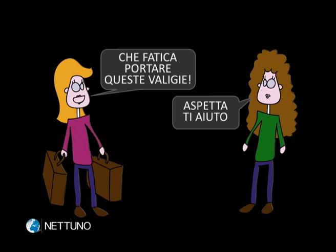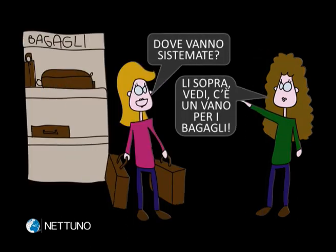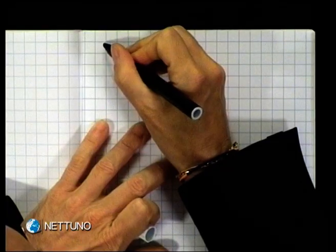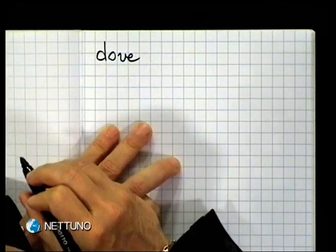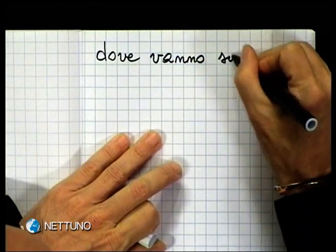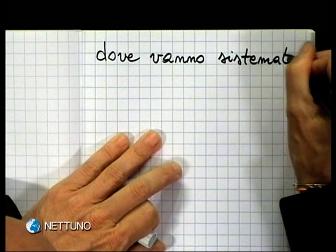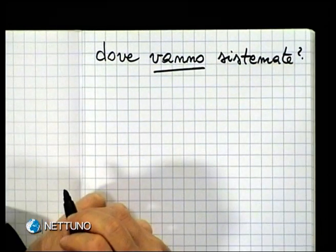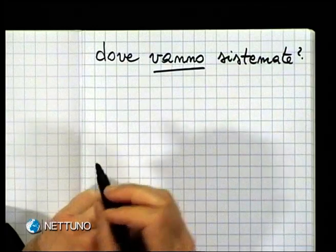Vediamo anche le immagini. Che fatica portare queste valigie. Aspetta, ti aiuto. Dove vanno sistemate? Lì sopra, vedi, c'è un vano per i bagagli. Si parla delle valigie: Dove vanno sistemate? Con riferimento alle valigie.